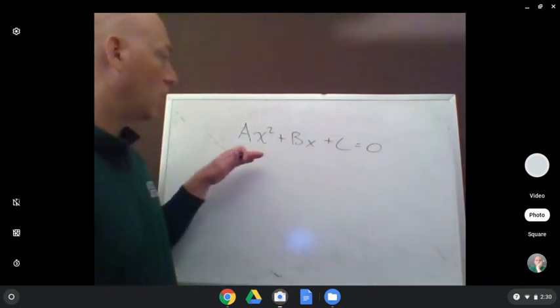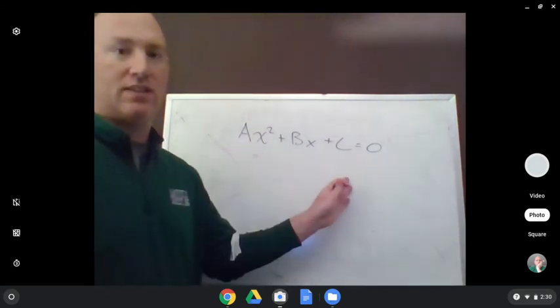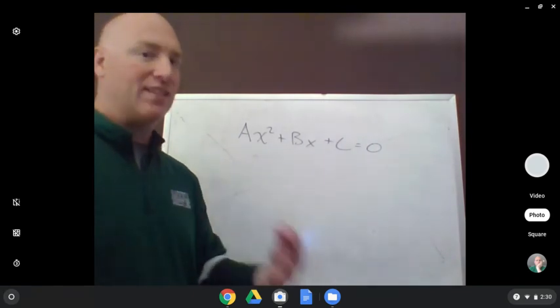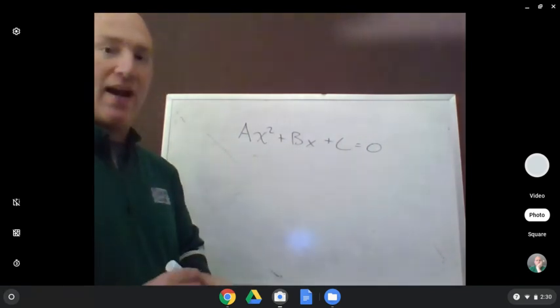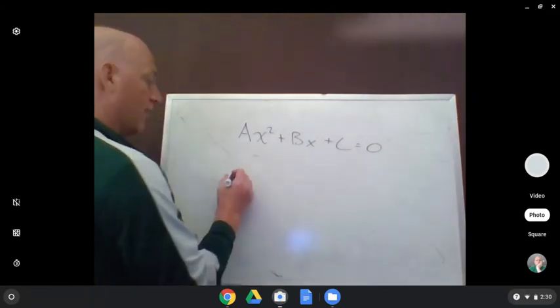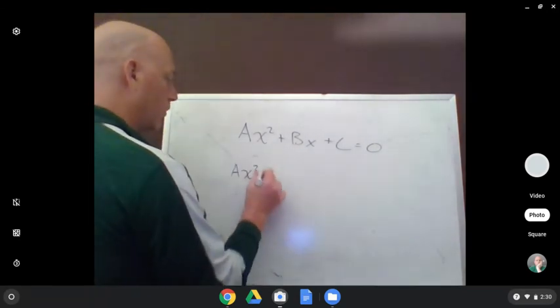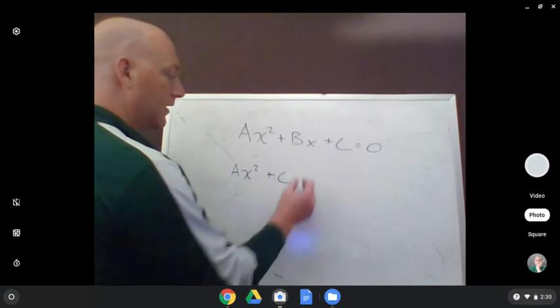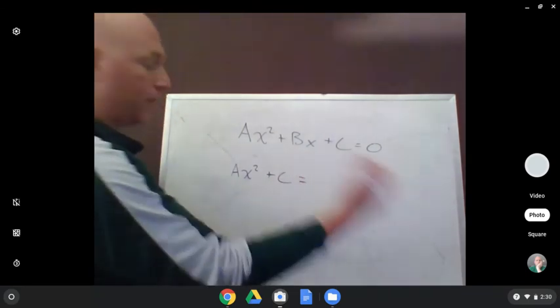Easiest way to solve it, graph it and see where it crosses the x-axis. You won't always have that option. So you had option A. If there is no bx term, so let's say you have any equation that is like ax squared plus c equals, and it could be 0 or it could be some other number.